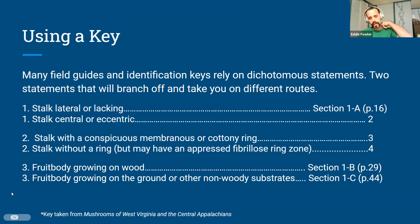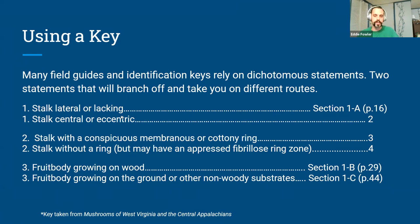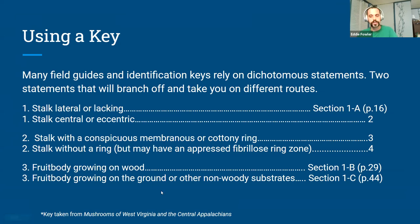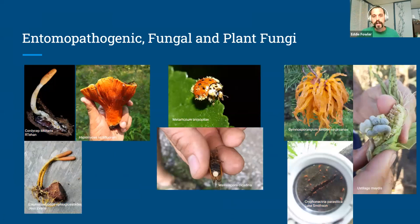This key was taken from 'Mushrooms of West Virginia and the Central Appalachians' and applies mostly to gilled mushrooms. You have two individual statements grouped together and you determine whether one is true for your specimen. For example, if the stock was central or eccentric — slightly off-center — you would go on to statement two. If it had a conspicuous membranous or cottony ring, you'd go to statement three, and so on, until you reach a statement identifying the potential species.